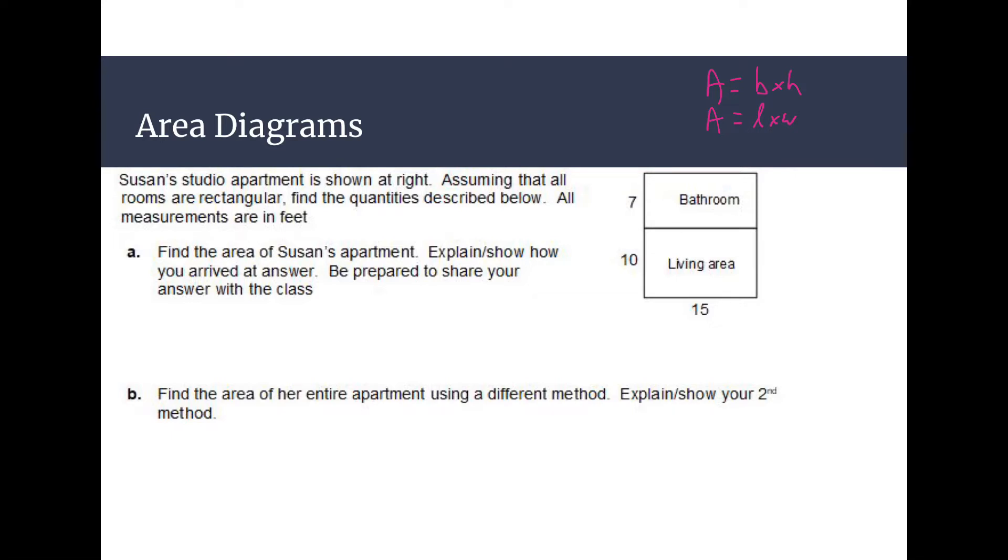All right, so first thing we can do here, one way is to find the area of each room. So the living room and the bathroom. So the living area, we can do area equals 10 times 15 to get an answer of 150. And then we can do the bathroom. And the area is going to be 7 times 15. Because if that's 15 then this is also 15.